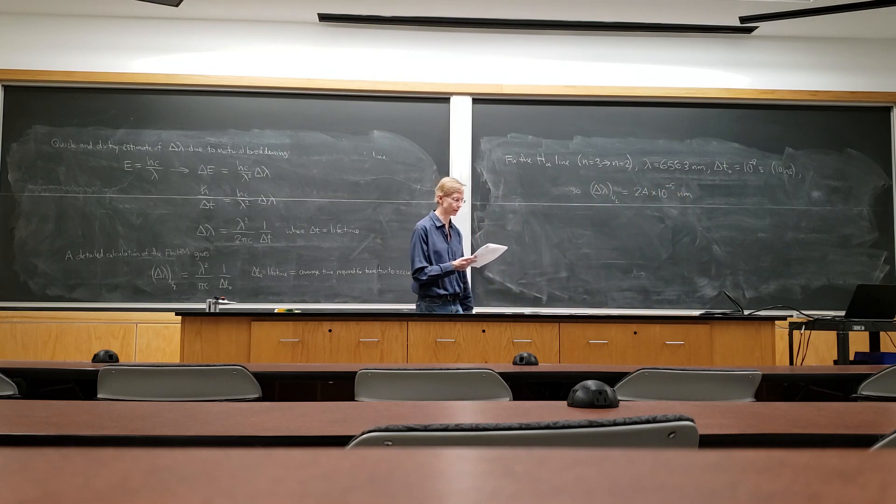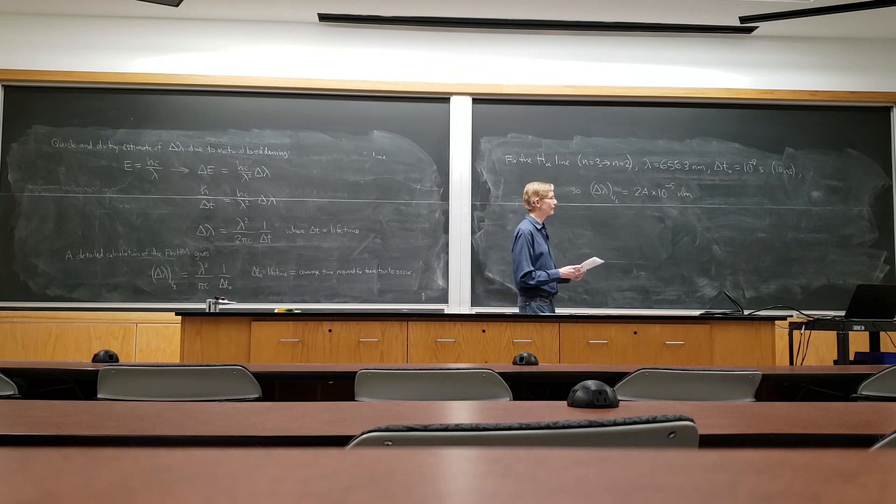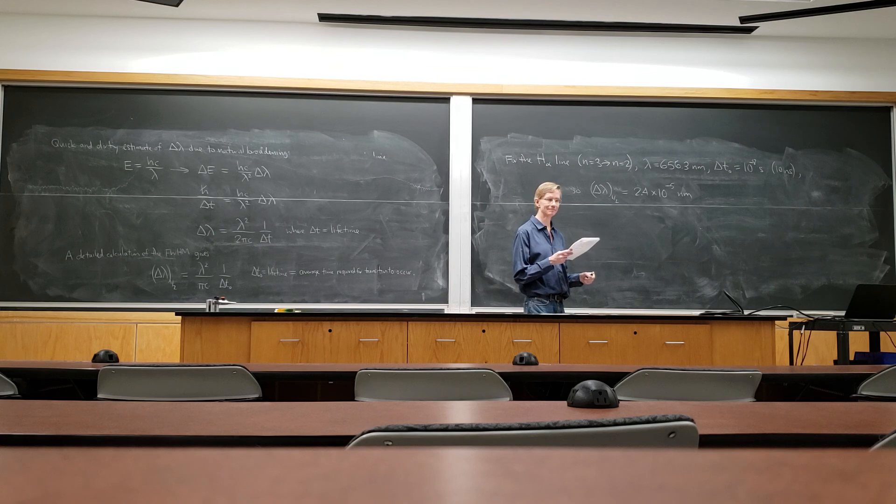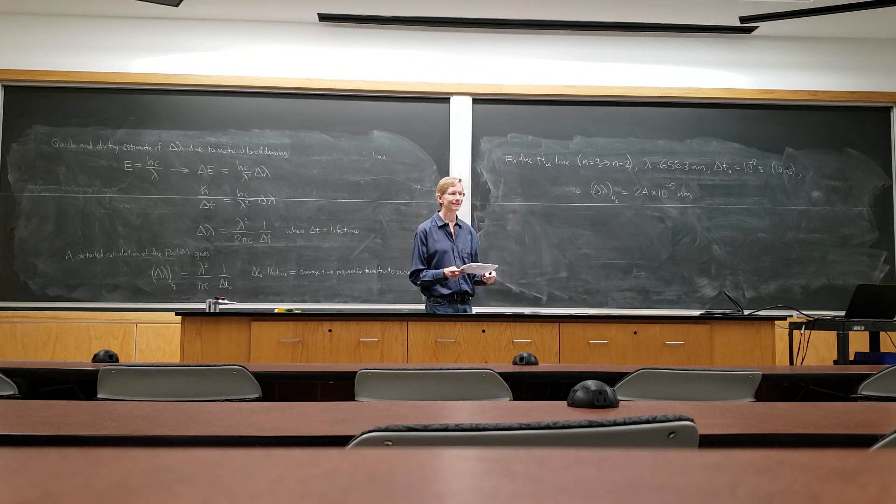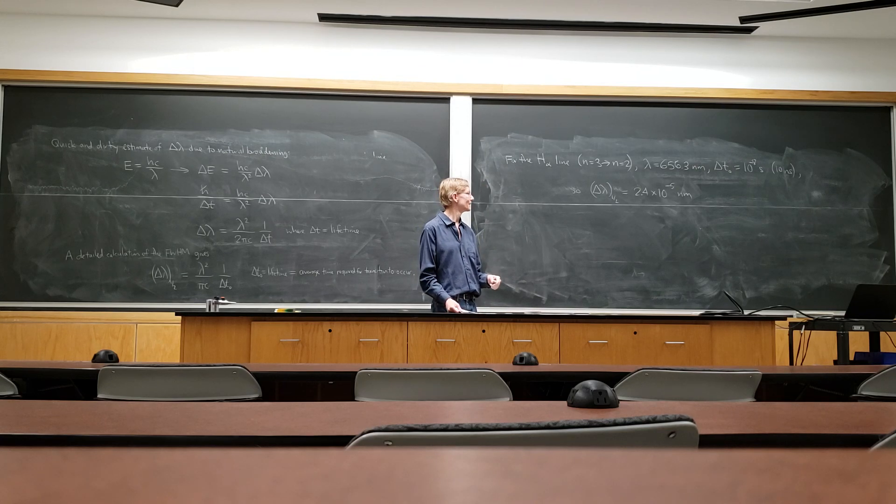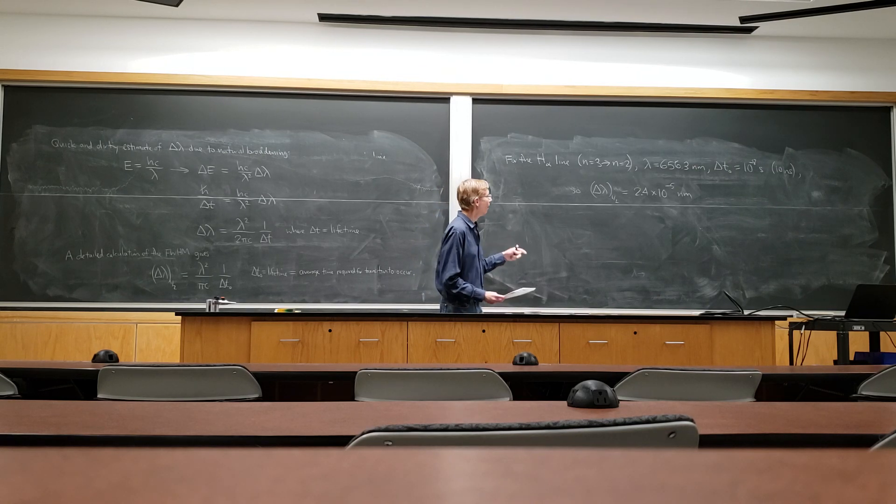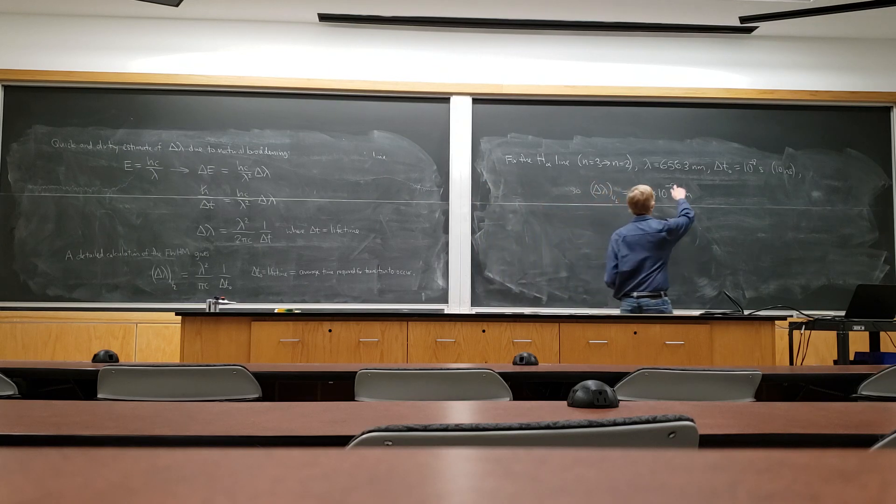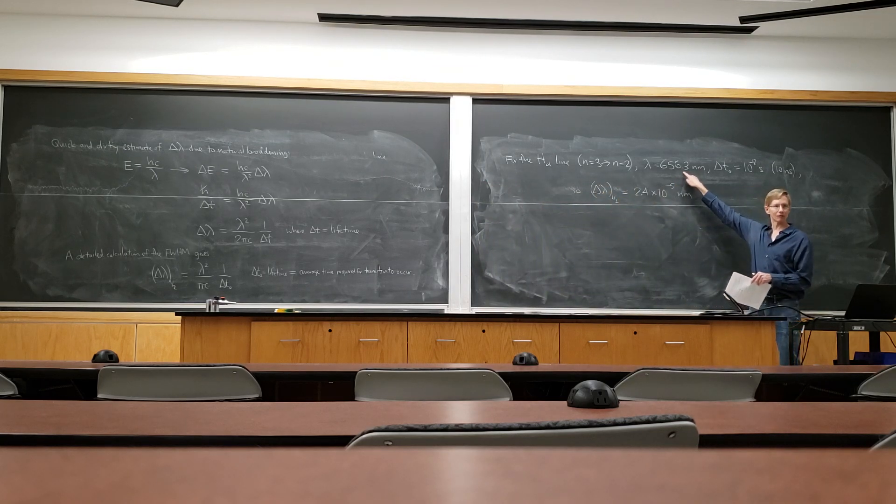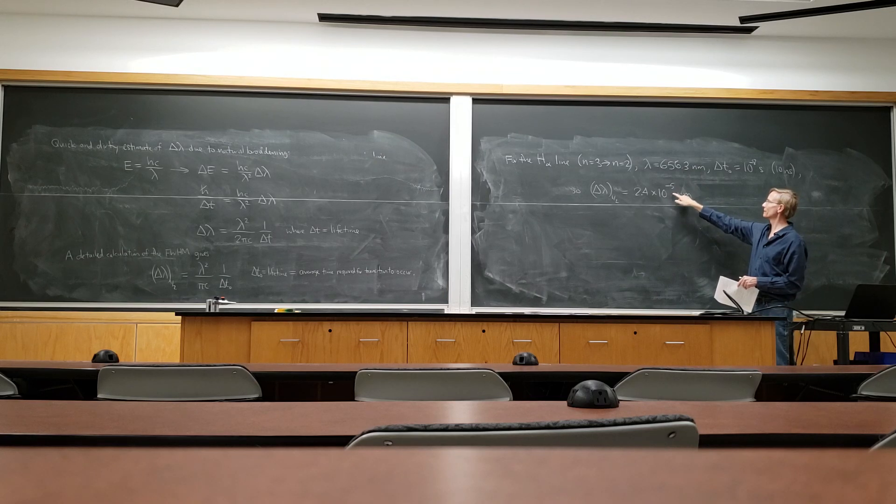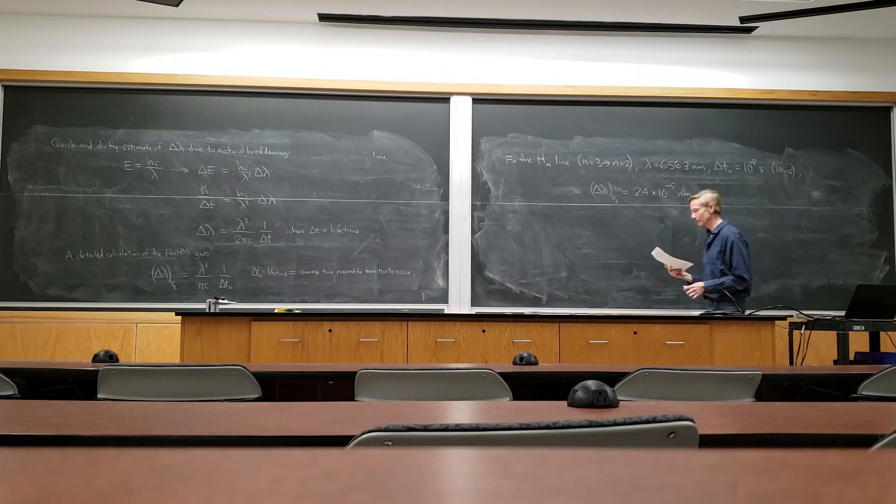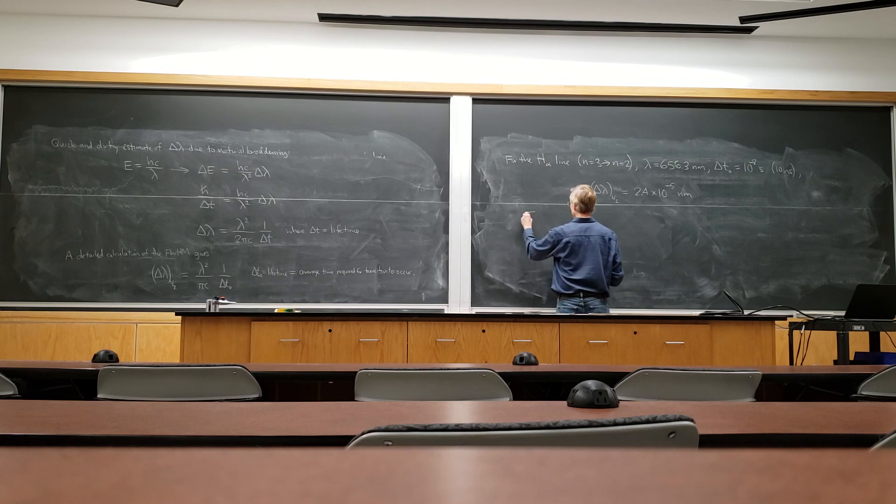Tiny. Very, very narrow. 10 to the minus 5. 2.4 times 10 to the minus 5 nanometers is the width of the line. So the natural width of visible spectral lines is generally quite small.